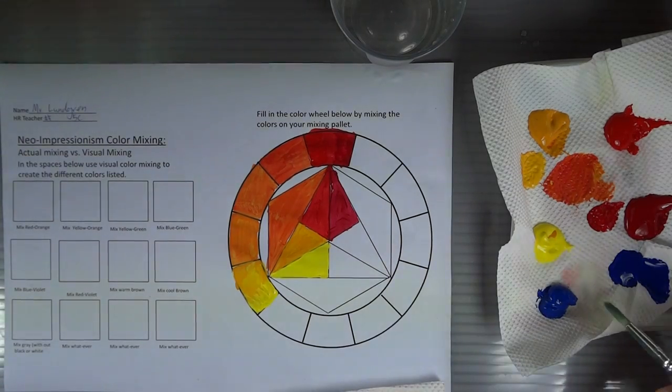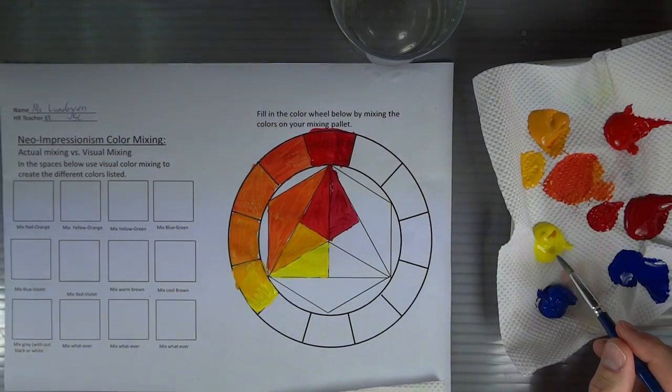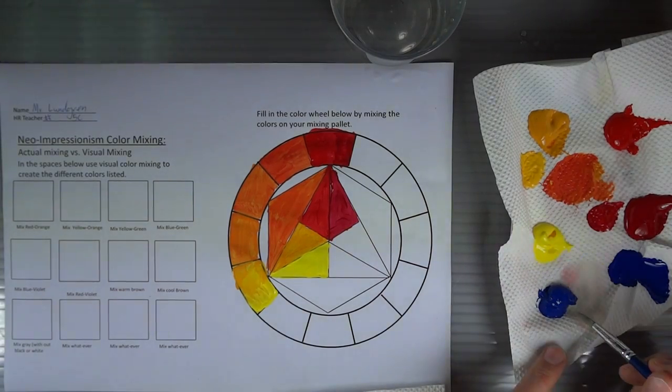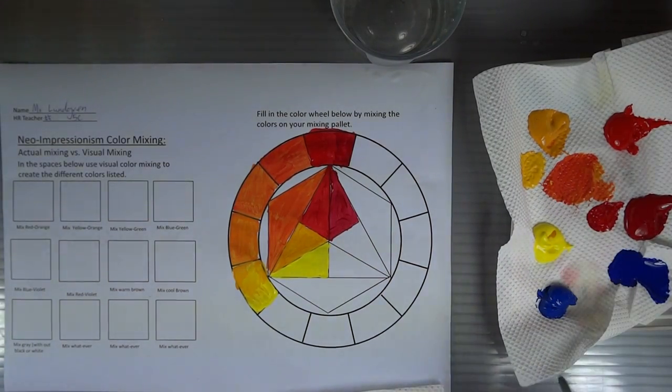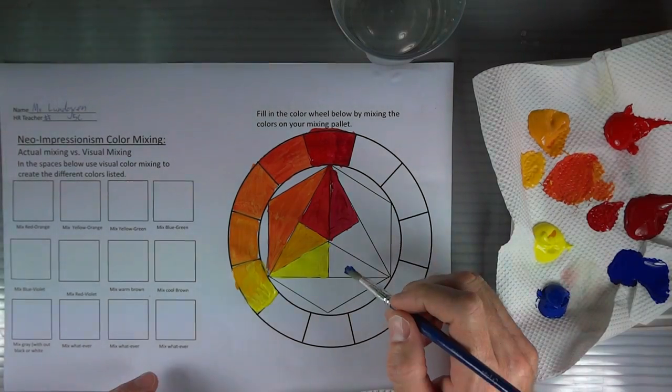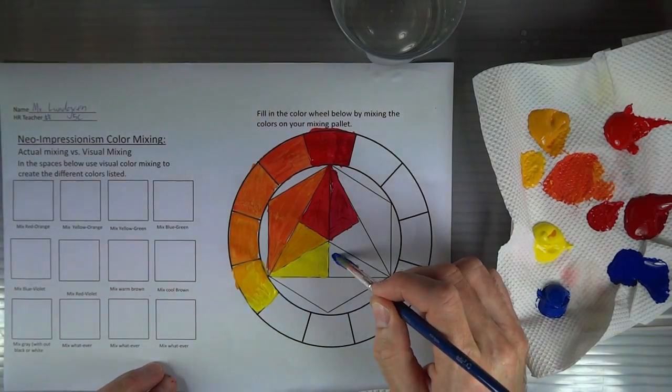I'm gonna start with my cool yellow. The cool yellow here is going to make the greenish spectrum that we would like to see. I'm gonna take a little bit of my cool blue and put it in this bottom triangle here.